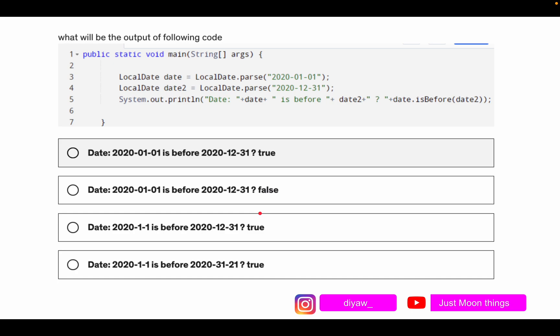Moving ahead to another question, what will be the output of following code? We have a main method over here, then we have three statements. In the first statement if you see, we are trying to create an object of LocalDate. The object names are date and date2.